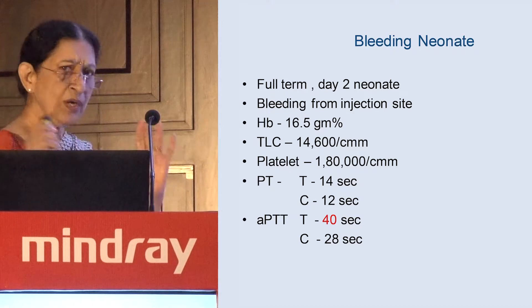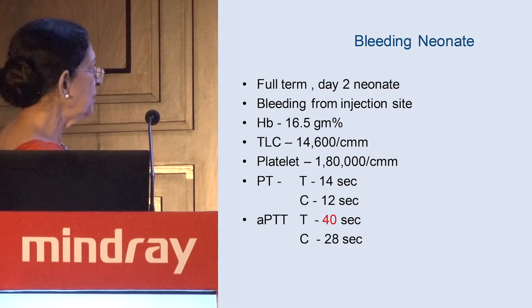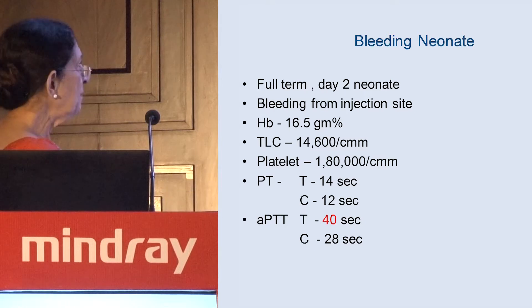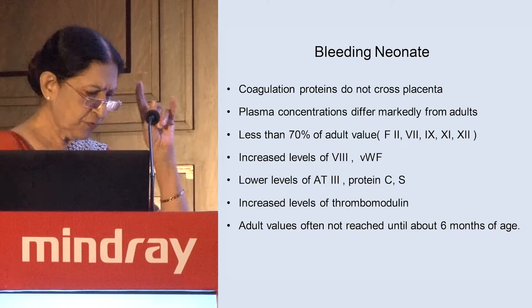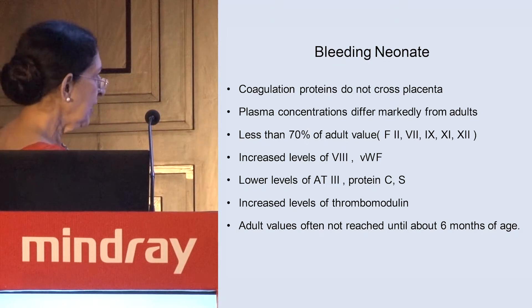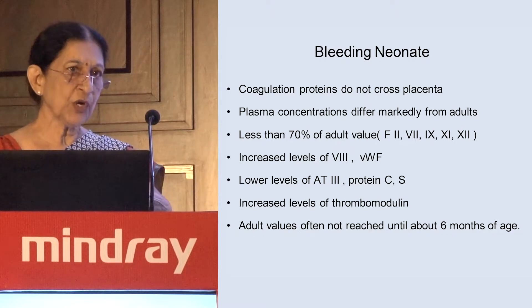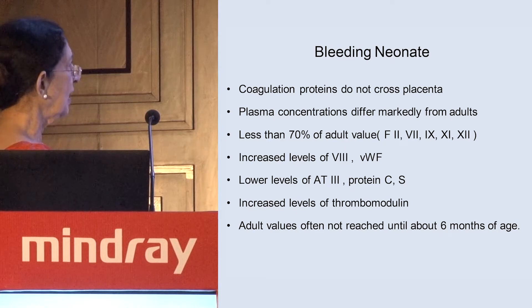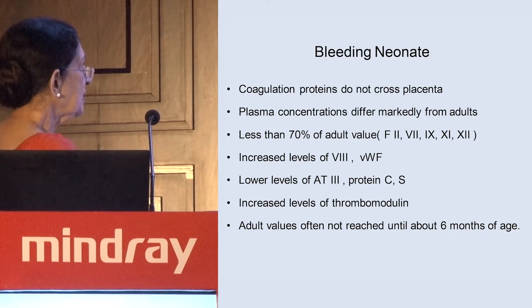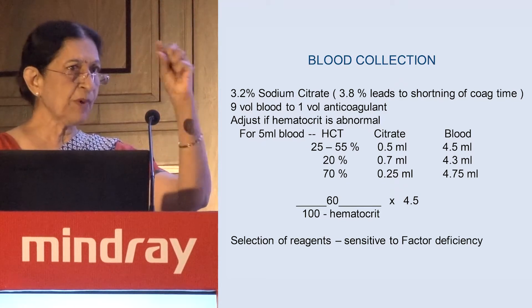For a bleeding neonate — consider a full-term baby on day two. All data must be interpreted with the day, time, and patient context in mind. Hemoglobin, WBC, and platelets may be normal; prothrombin normal; APTT 40 with a control of 28. Remember: coagulation proteins do not cross the placenta, and plasma concentrations differ markedly from adults. That control of 28 is from an adult — no normal baby will provide blood for a reference control, so we are comparing against adult values.